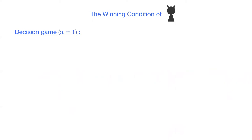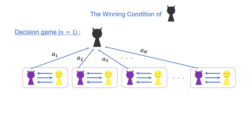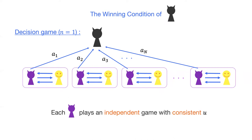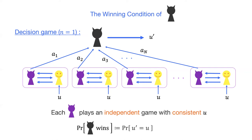For the decision game, we assume that each inner adversary plays an independent game with a consistent secret bit U. Namely, a secret bit U is initially sampled and the same secret is used in each local game. After collecting information from the inner adversaries, the outer adversary finally outputs his prediction U'. The winning condition is that the prediction equals U. So, the task of the outer adversary is to invoke inner adversaries many times until he can collect sufficient information to predict U.